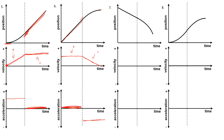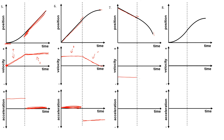Number seven: in the first section of motion, you have a constant negative slope, so that would mean a flat constant negative velocity. Then that goes from a negative slope to an even more negative slope, so you would draw this line getting more negative. For the acceleration, at first there's no change in velocity, so you'd have no acceleration. Then here you have a negative slope, which means you would have a negative acceleration.